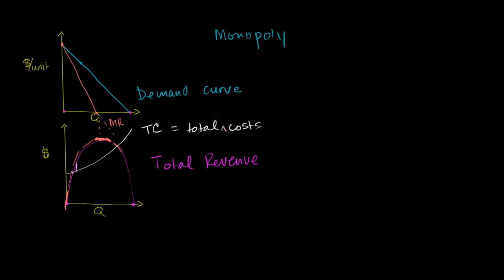To be clear, this is total economic costs — total opportunity costs — just to make sure we realize we're talking about economic profit. Remember, you could have zero economic profit, which is a normal profit, but you could still make an accounting profit. If you say you have zero economic profit, it does not mean you're not making any money — it just means you're not making any money above and beyond your opportunity costs.